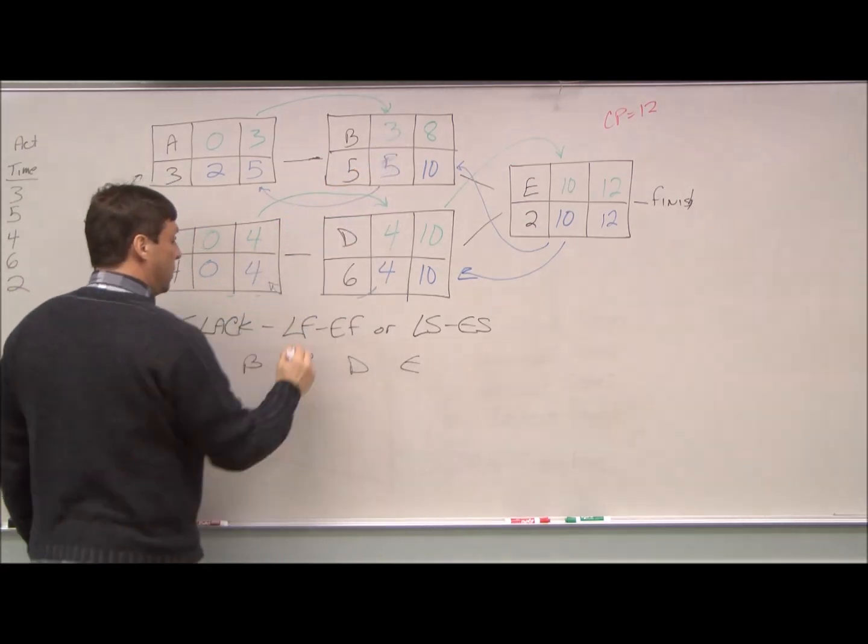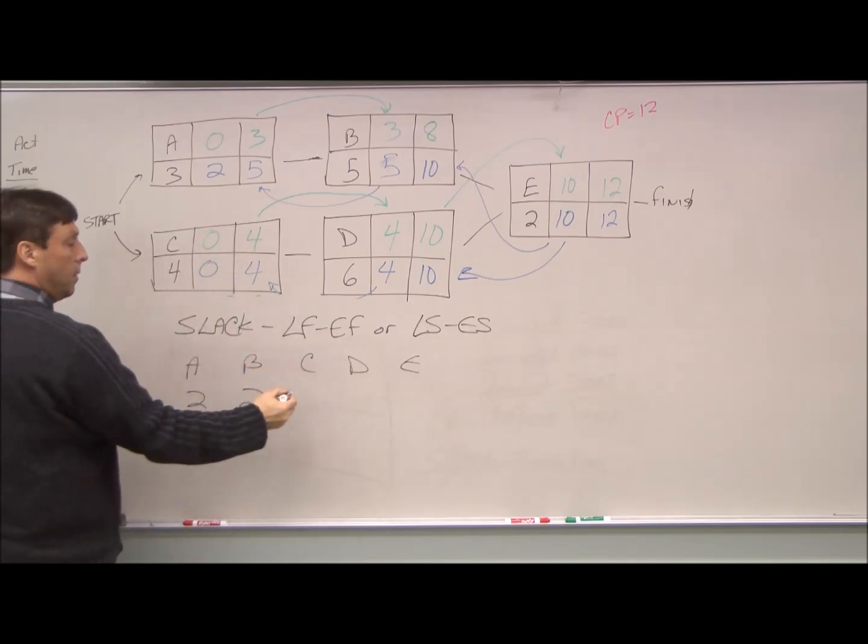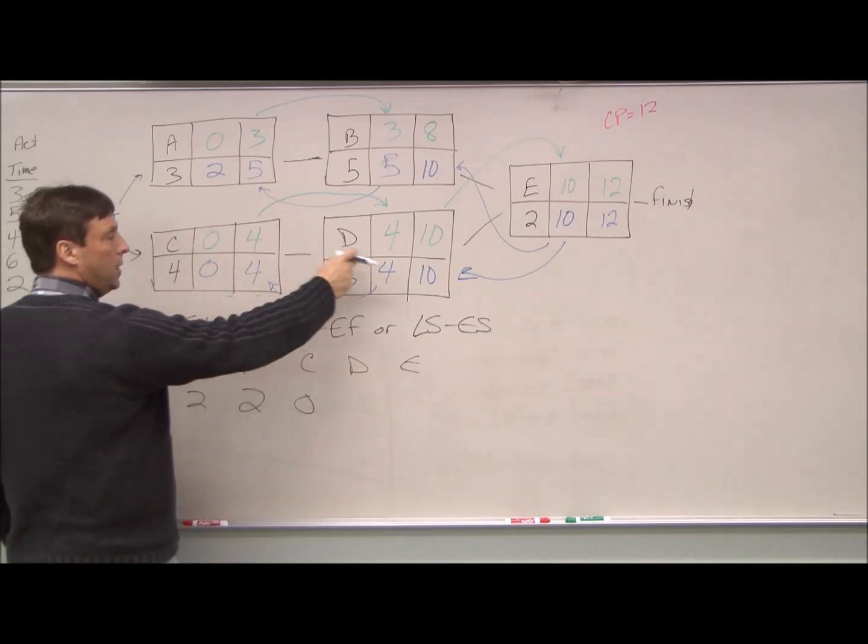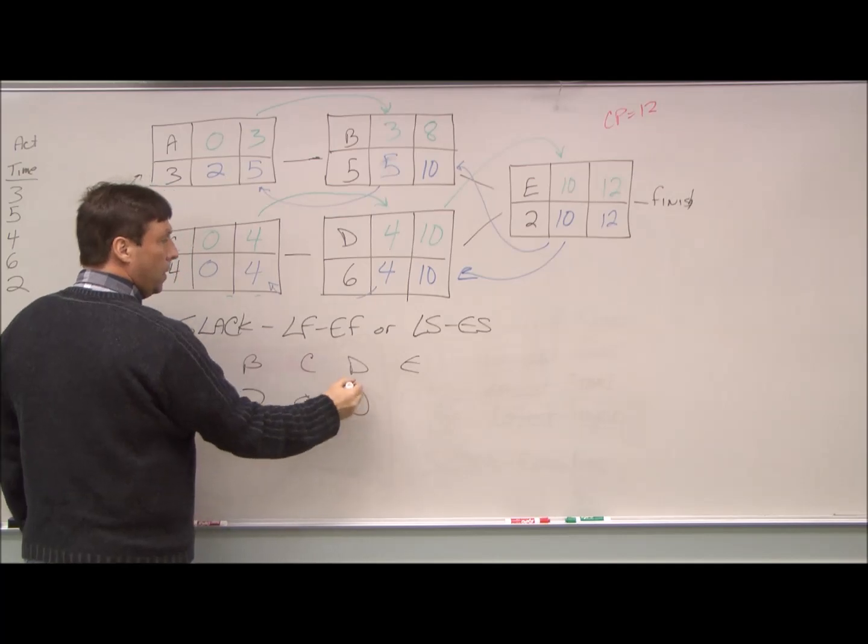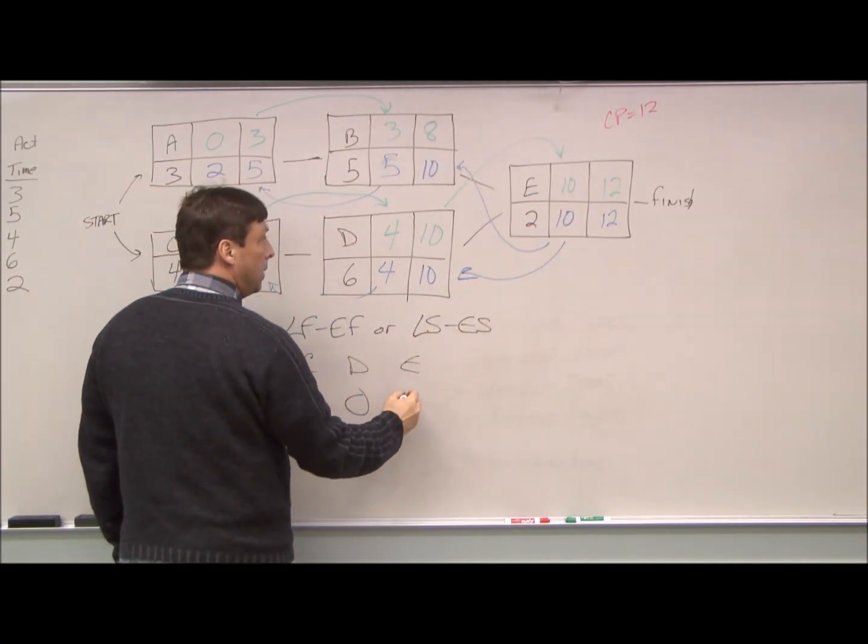Again, five minus three is two. For C, zero minus zero is zero. For D, four minus four is zero. For E, ten minus ten is zero.